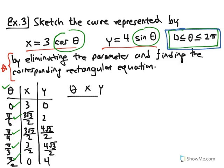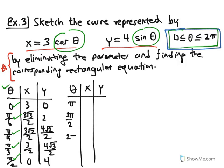Choosing additional values: at θ = π, cos π = −1, so x = −3; sin π = 0, so y = 0. At θ = 3π/2: cos(3π/2) = 0, so x = 0; sin(3π/2) = −1, so y = −4. At θ = 2π: cos(2π) = 1, so x = 3; sin(2π) = 0, so y = 0. Taking these ordered pairs and plotting them gives us our curve.